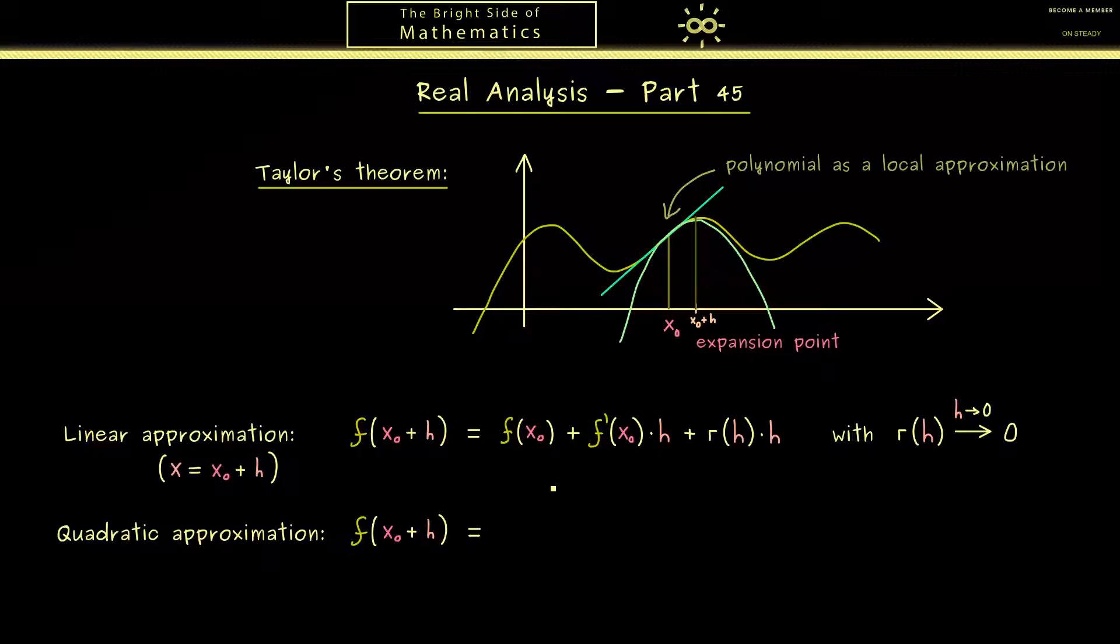Now maybe not so surprising in a similar way we can write down a quadratic approximation. Of course the linear term here should not change but now we want to add a term with h squared. And as we will see soon the best quadratic approximation is then given with 1 half times f double prime of x0 times h squared.